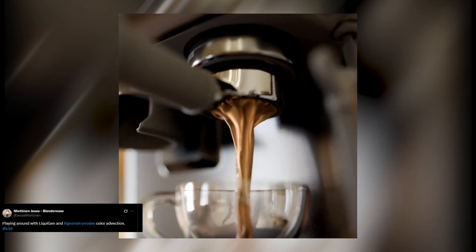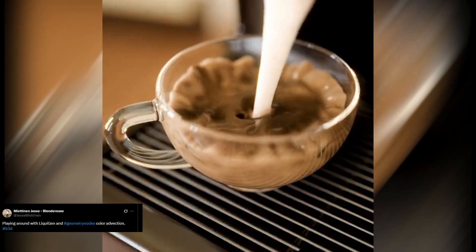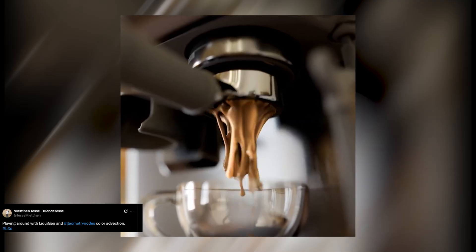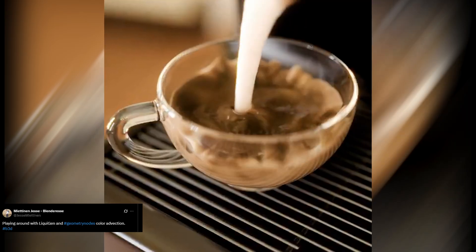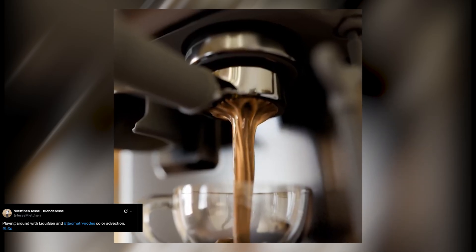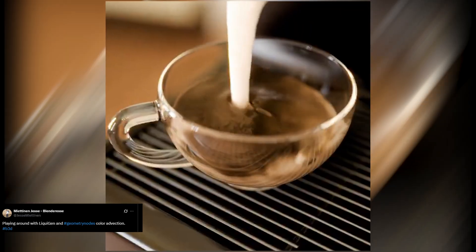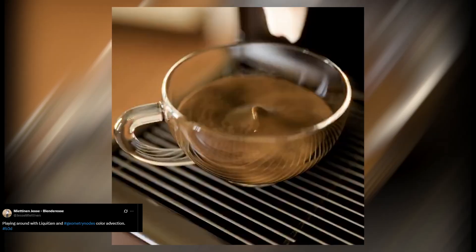Blender can't do everything, so sometimes you have to bring in data from other programs. I do this a lot with Houdini. But importing attributes can make files huge or straight-up crash Blender. The cool part is that Geometry Nodes can just recreate those attributes inside Blender. Mietinen shows this perfectly by rebuilding color advection to swirl coffee and milk together without importing heavy data.